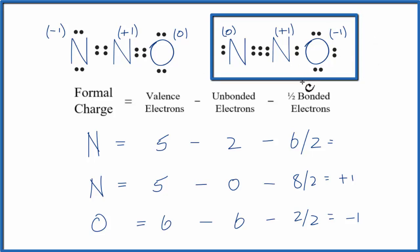To recap, we calculated the formal charges for each structure, and then we made a decision about which one was the best. In this case, because oxygen is more electronegative, we'd expect it to have the negative charge. This is Dr. B with the formal charges for each element in N2O. Thanks for watching.